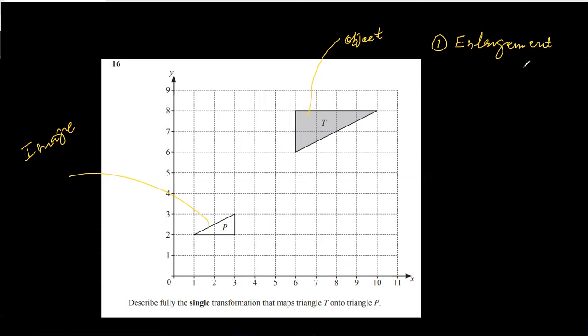So, we have the one mark, for enlargement. That's the first mark, one mark. Second mark, which we give, is the scale factor.